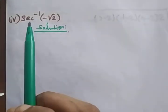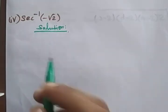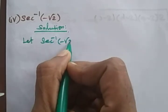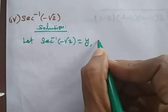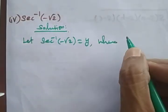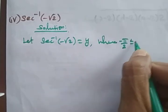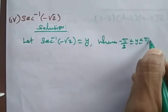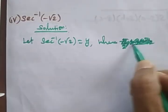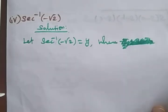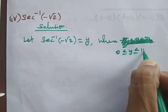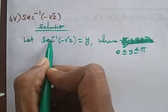Next, find the principal value of secant⁻¹(−√2). Let secant⁻¹(−√2) = y, where the interval for secant⁻¹(x) is [0, π] excluding π/2. So 0 ≤ y ≤ π.